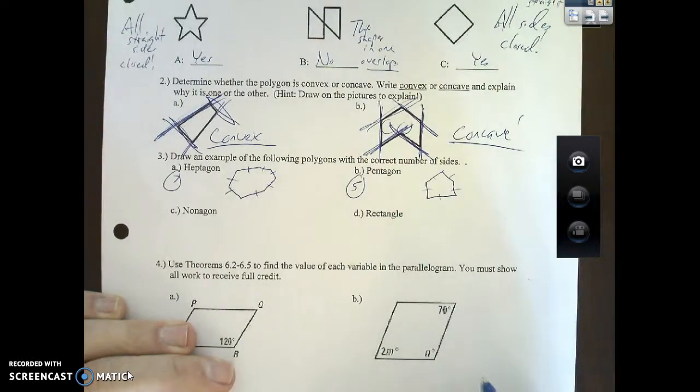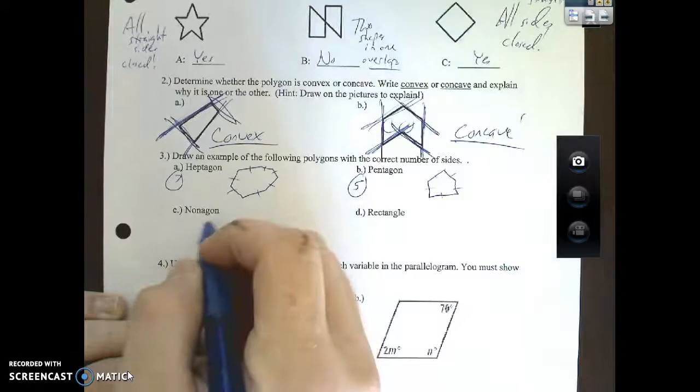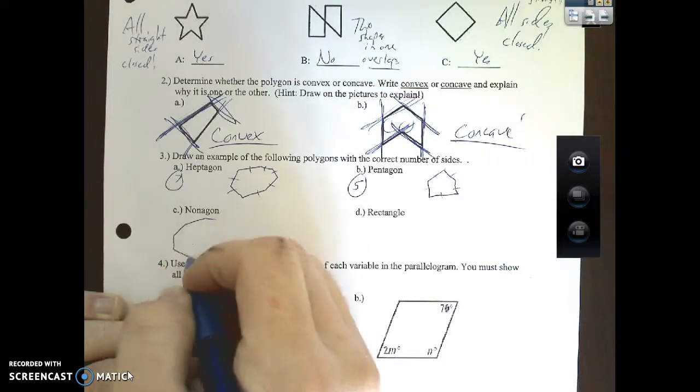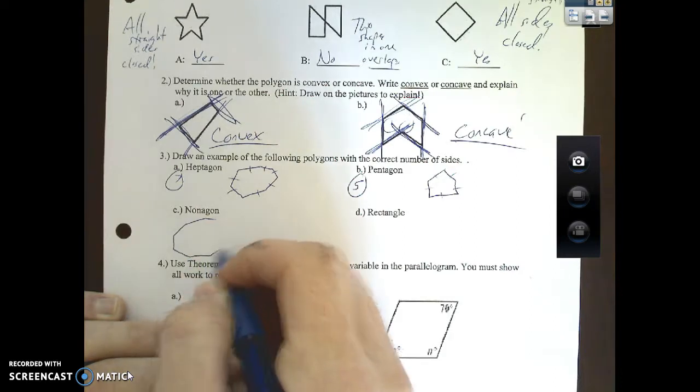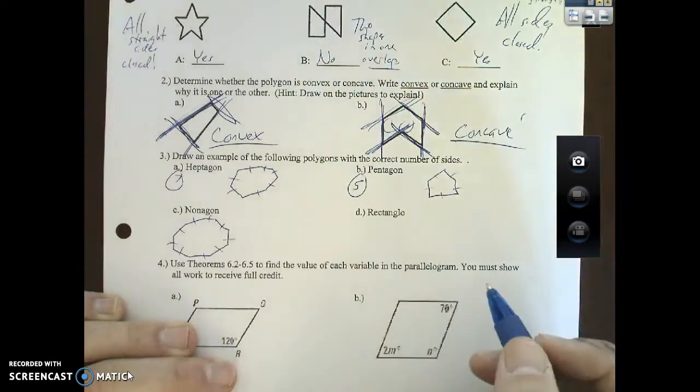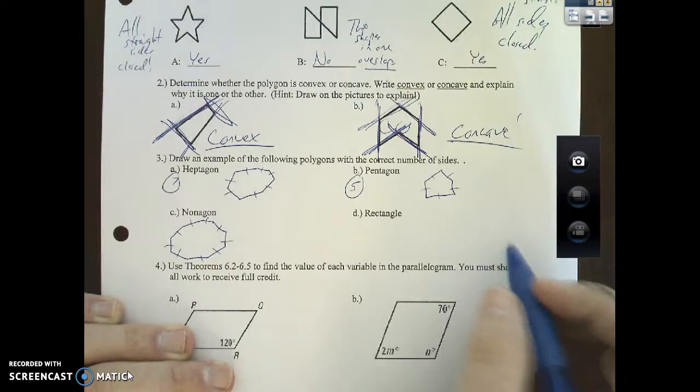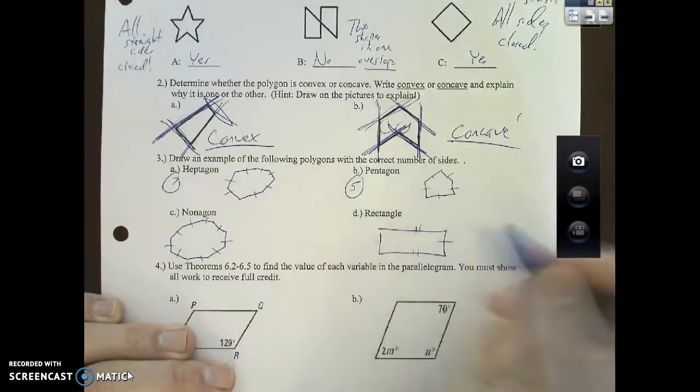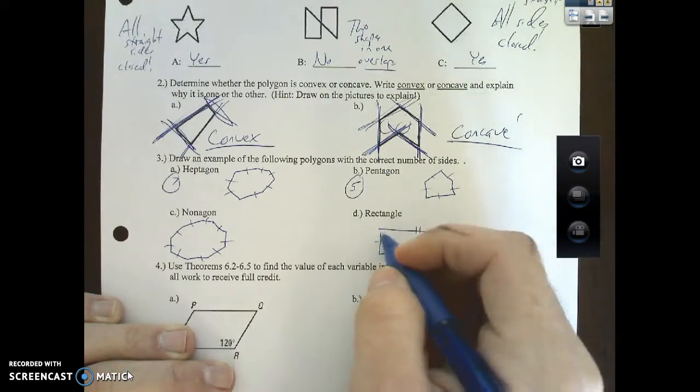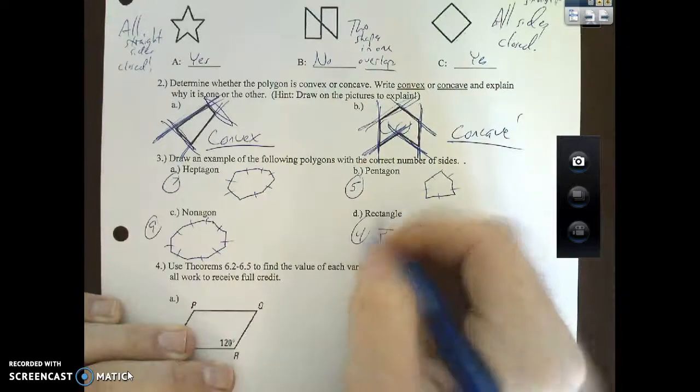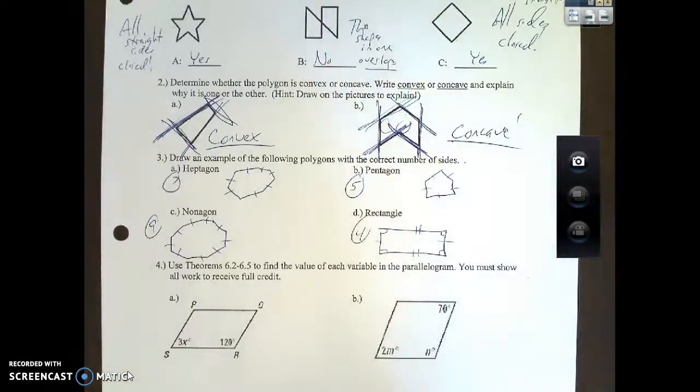Pentagon is five. Nonagon is nine, bear with me here: one, two, three, four, five, six, seven, eight, nine. Do it very much as you can. And a rectangle, which is very specific but okay, four-sided shape, you get the idea.